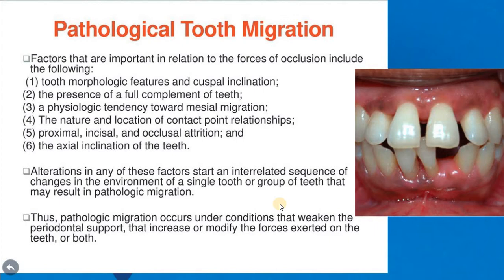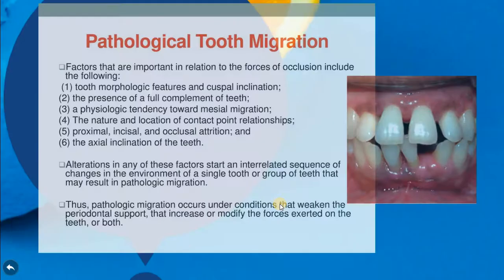Pathological migration occurs under conditions that weaken the periodontal support, that increase or modify the forces exerted on the teeth, or both. So we have: periodontal disease and excessive occlusal force leading to pathological tooth migration; excessive occlusal force alone also causing it; or both factors together — periodontal disease and excessive force — resulting in pathological tooth migration.